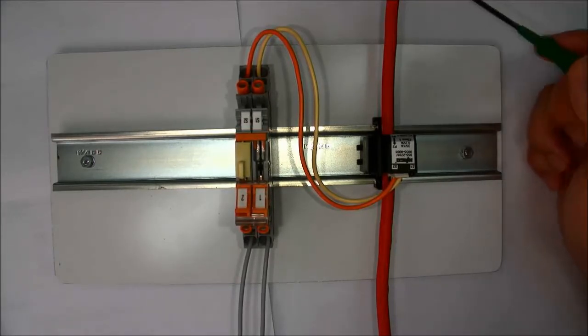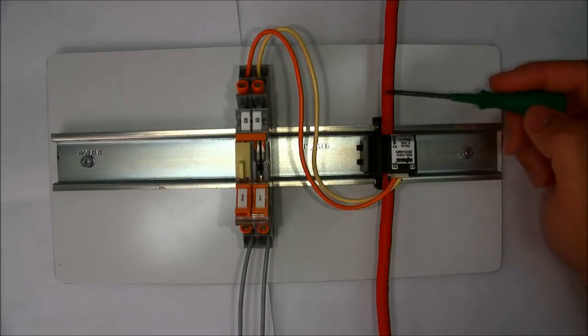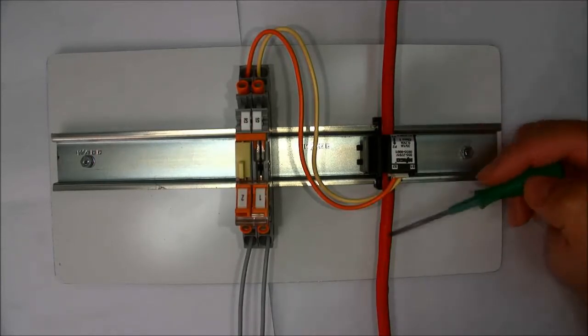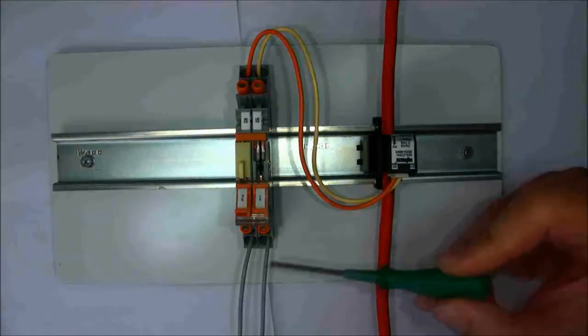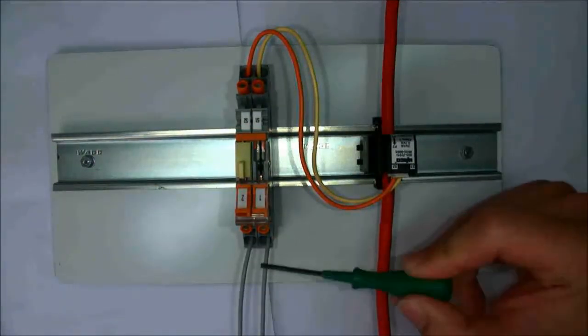Just to explain this setup here, we've got our primary current flowing through the red wire, which is fed through the CT. Then we have a secondary current which flows out of the CT into the CT terminal block, and then we have a meter connected on this end.